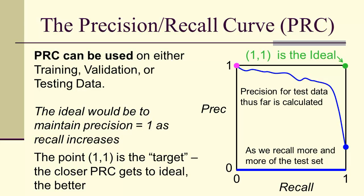So 1,1 is the goal, or the ideal, or the target in a precision recall curve. We want to get as close to it as possible.